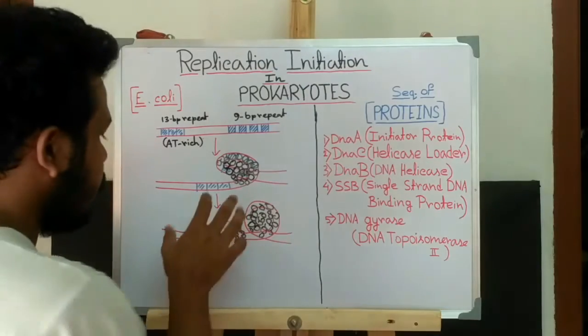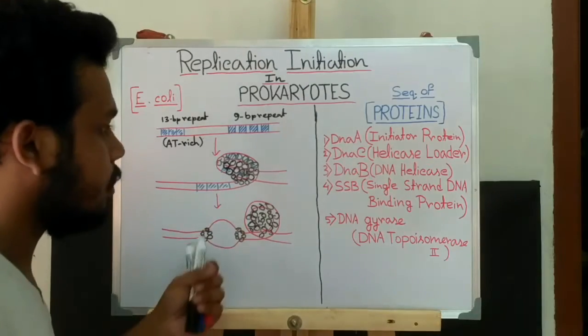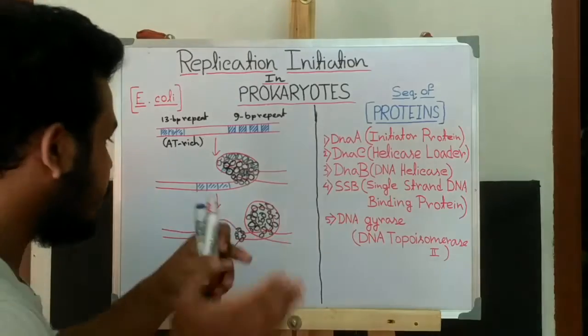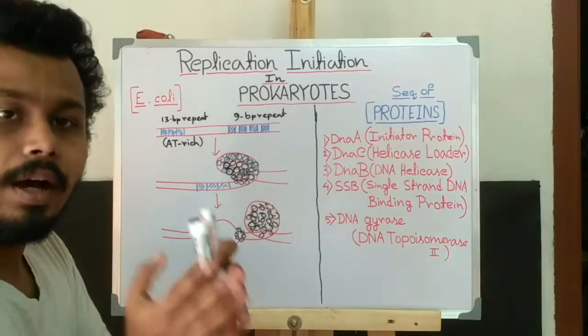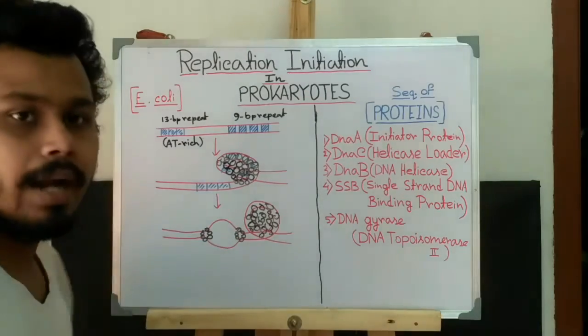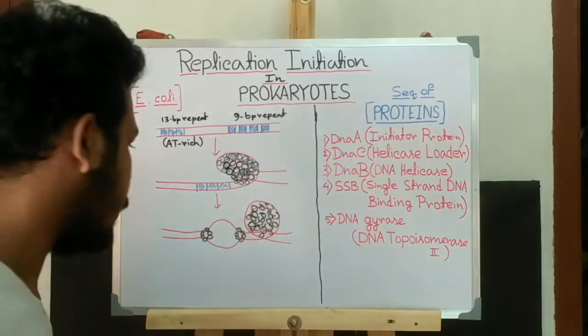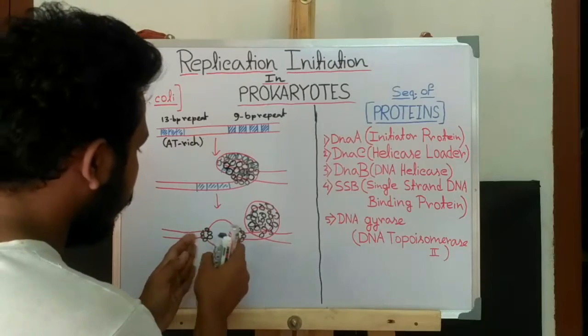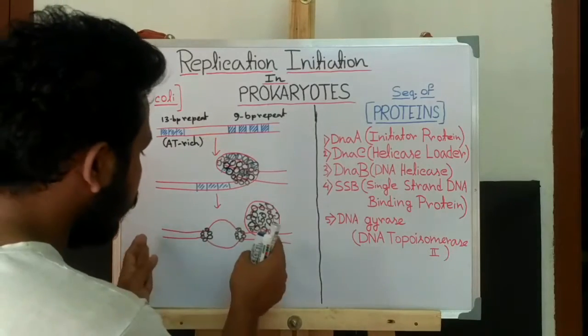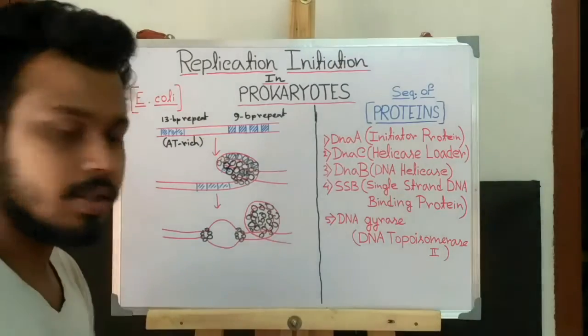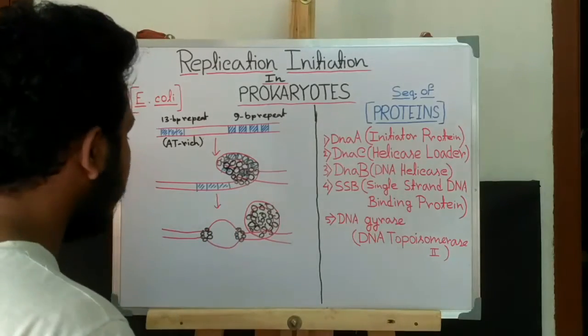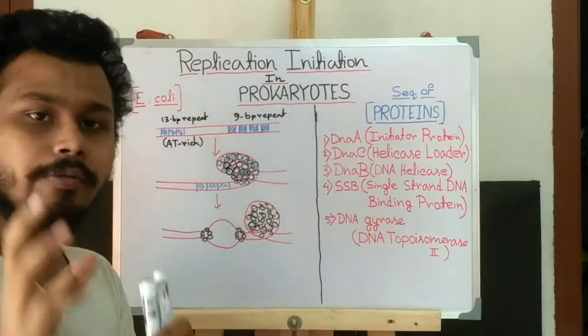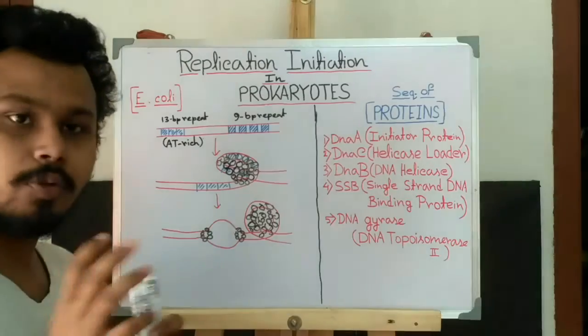And the role of DnaB, that is the DNA helicase, is to unwind the DNA by breaking the hydrogen bonds between them, and the energy comes from ATP hydrolysis. Now the DnaB goes ahead in two directions, that is bidirectionally. And it creates a topological stress, that is the positive supercoil in the DNA.